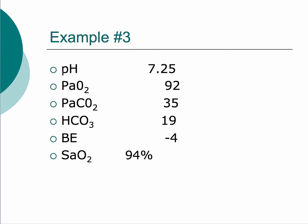Example three: pH 7.25, pCO2 35, PaO2 92, bicarb 19, base excess minus 4. pH 7.25 is an acidosis. pCO2 is 35 — that's normal, so not the cause. PaO2 and oxygen saturation are normal. But bicarb is below the normal lower limit of 22, and base excess is minus 4. This is an uncompensated metabolic acidosis.